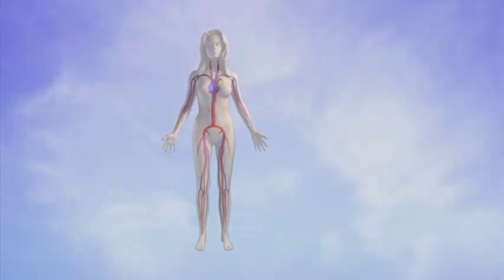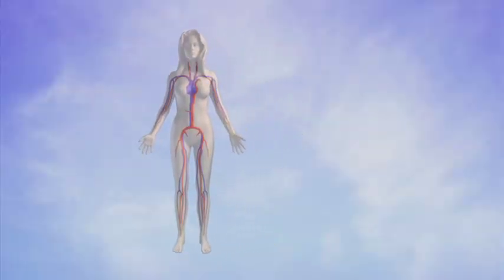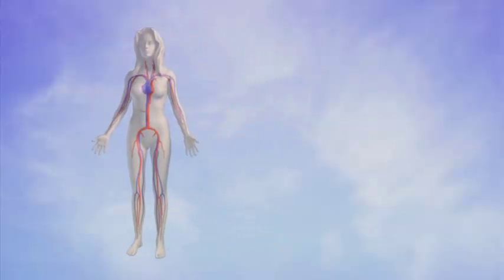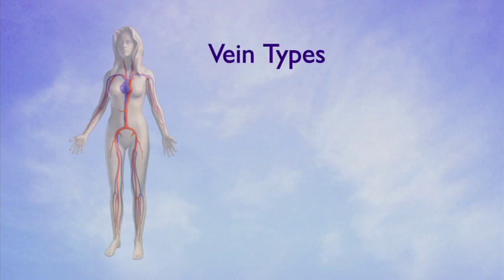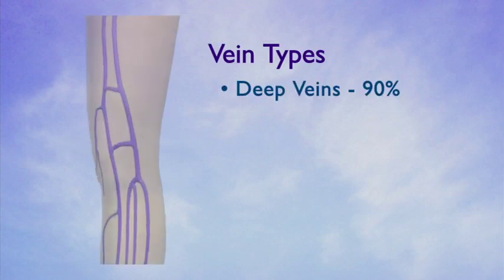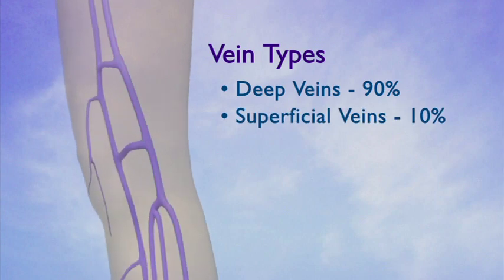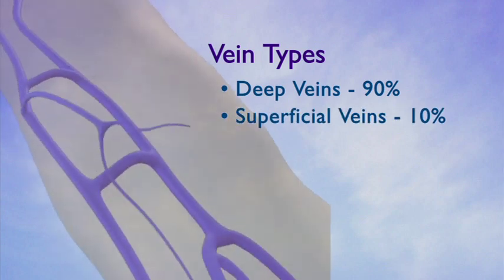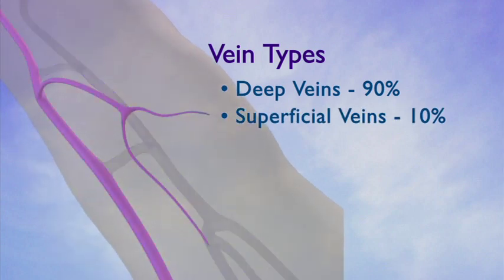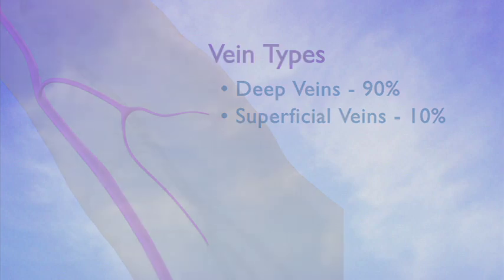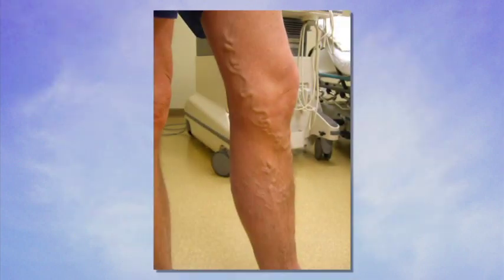Veins are responsible for the return of blood from the extremities back to the heart. There are two basic types of veins in our legs. The deep veins, which run next to muscles, carry 90% of all blood return from the legs to the heart. The superficial veins return the remaining 10% of blood from the leg and are often visible, especially when diseased.